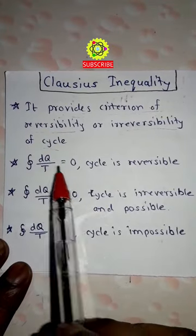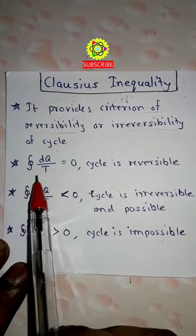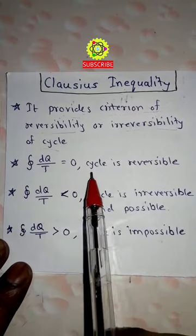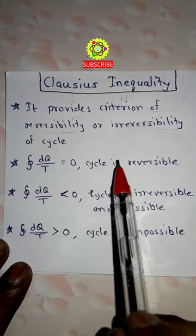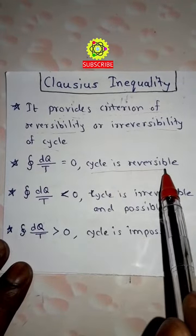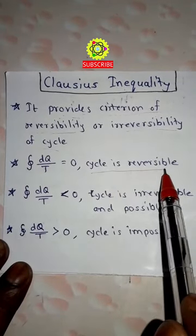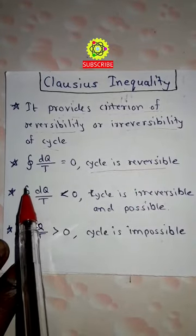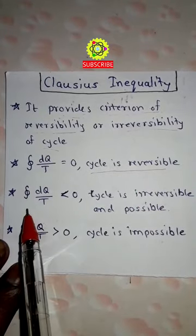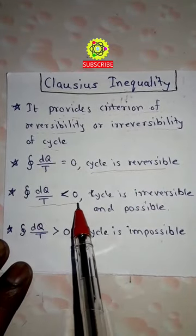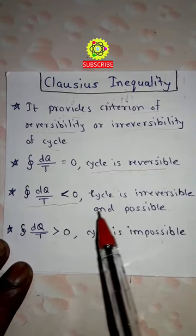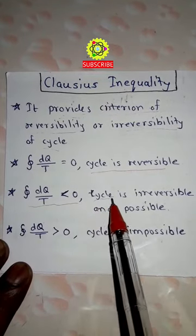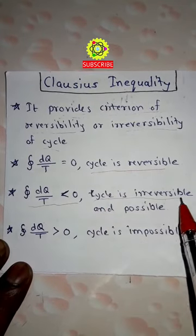When the cyclic integration of dQ upon T is equal to zero, the cycle is reversible. When the cyclic integration of dQ upon T is less than zero, the cycle is irreversible.